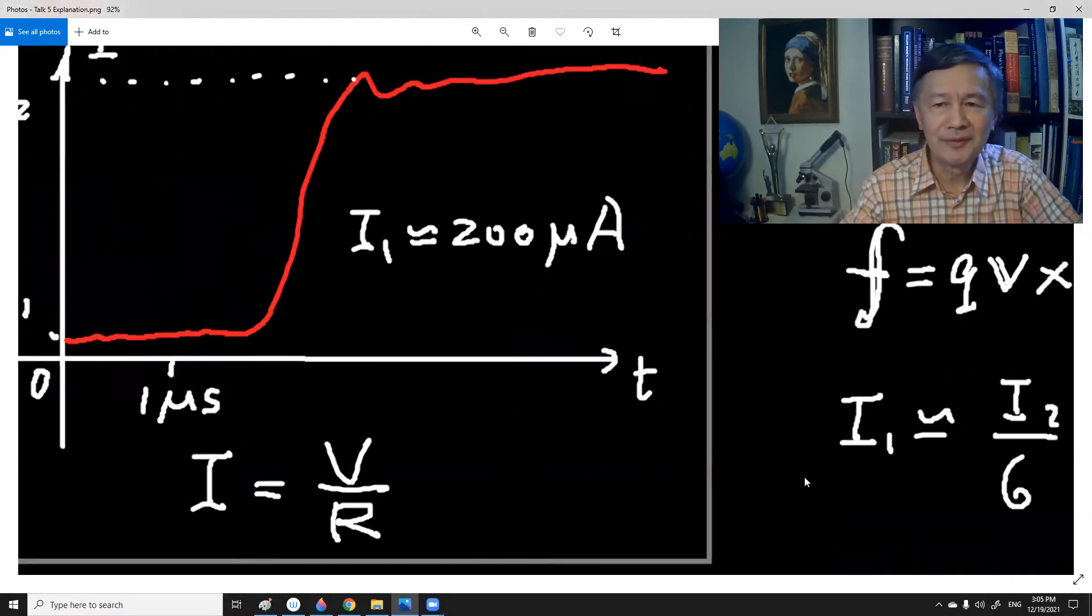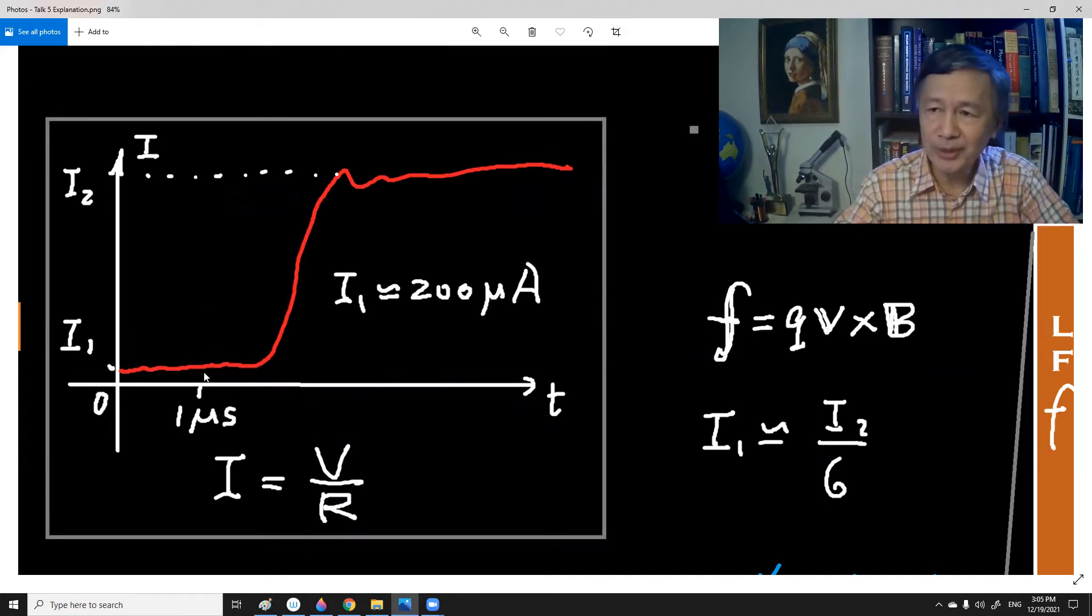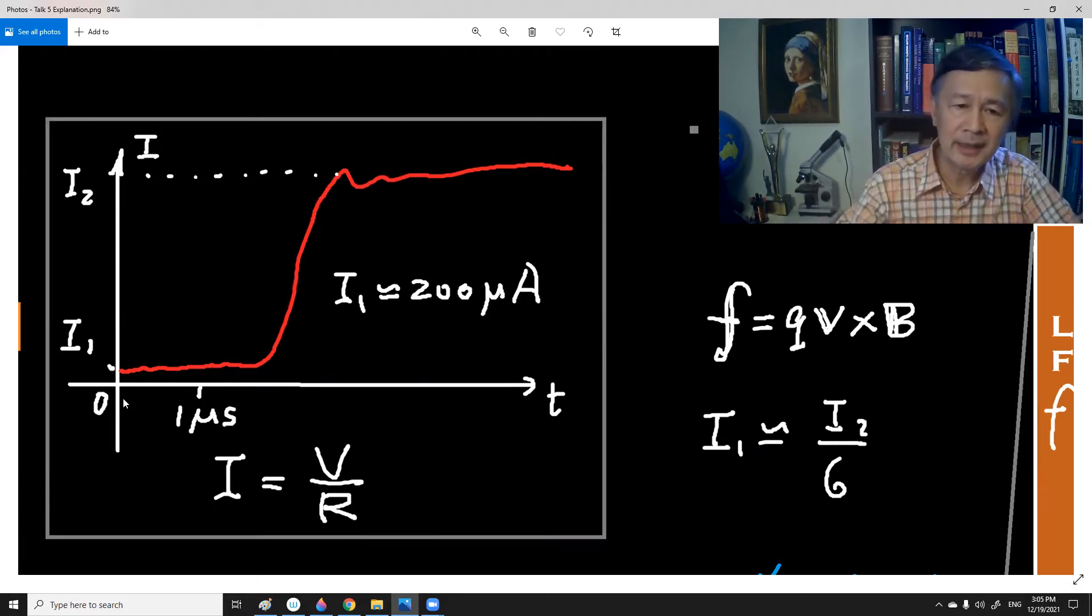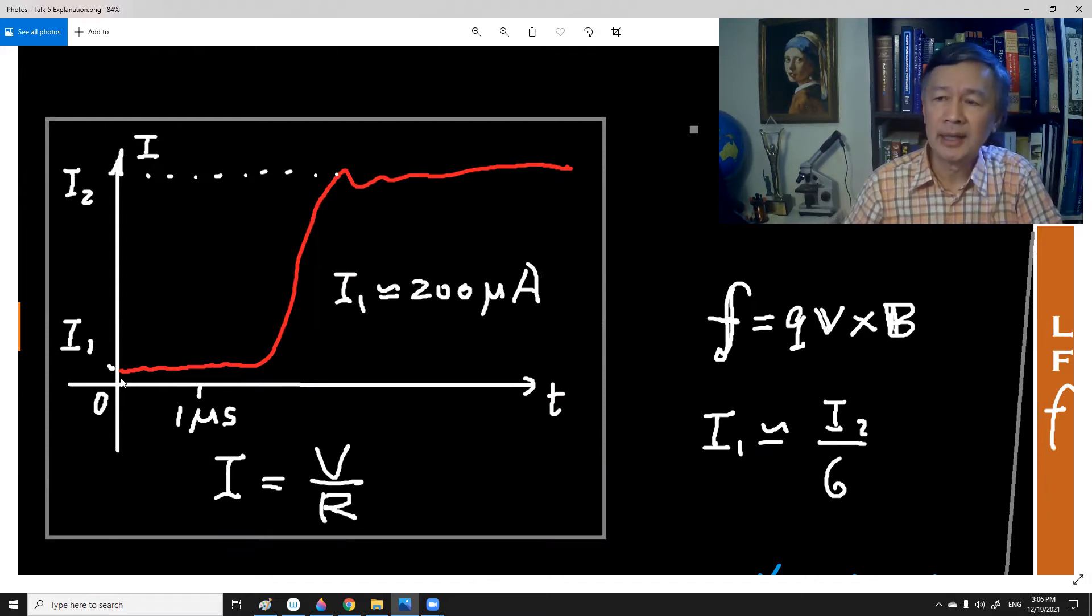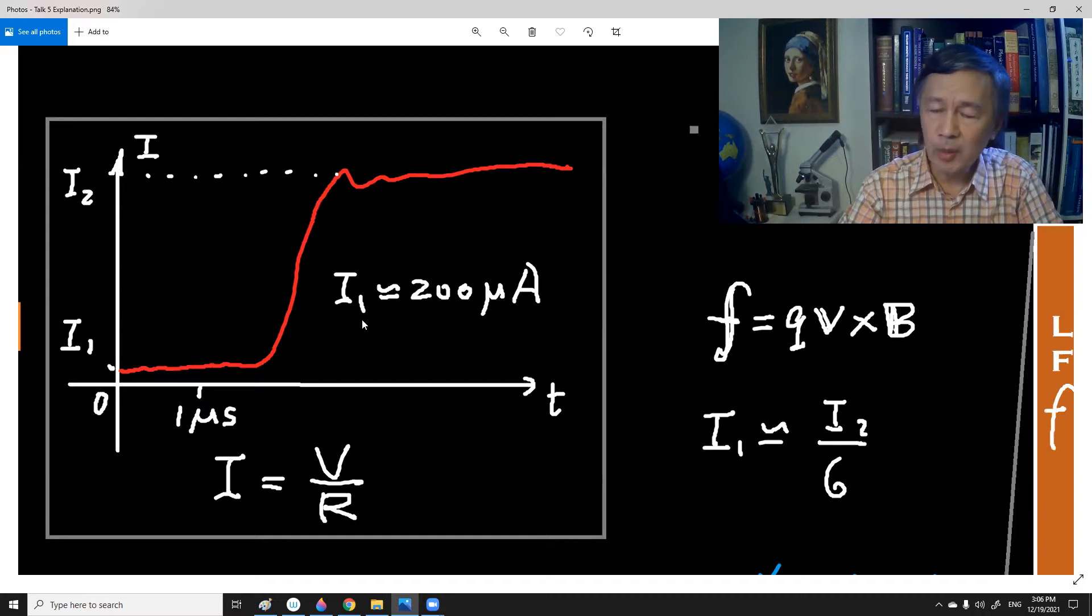Here is the experimental result. From this diagram, you can see that the measured current is represented by this red curve. As you can see, as far as the microsecond timescale is concerned, the current can be measured almost instantaneously once you switch on the battery. Eventually, after about one or two microseconds, the steady state can be achieved as shown in this onset of the current too. To be exact, the current I₁ is about 200 microamp, so it's not insignificant. How can we explain this experimental result?